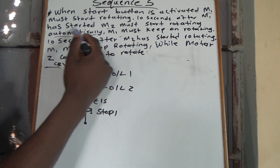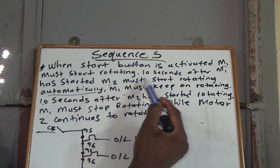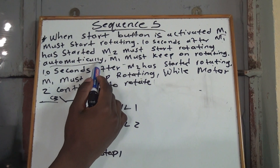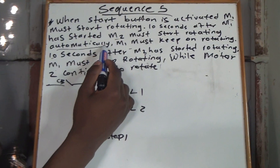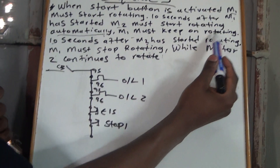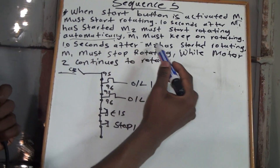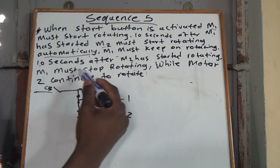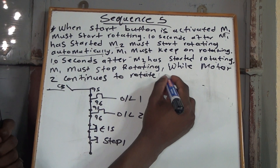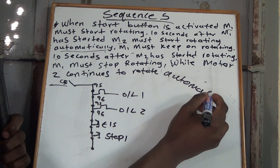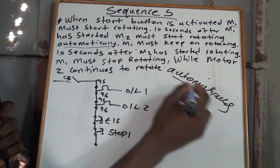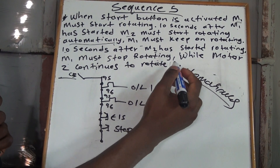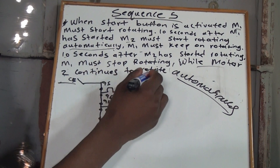10 seconds after Motor 1 is started, Motor 2 must start rotating automatically. So it means that you don't have to press again — you only press the start button once. Then Motor 1 must keep on rotating. Then 10 seconds after Motor 2 has started rotating, Motor 1 must stop rotating automatically, without you stopping it, while Motor 2 continues to rotate.